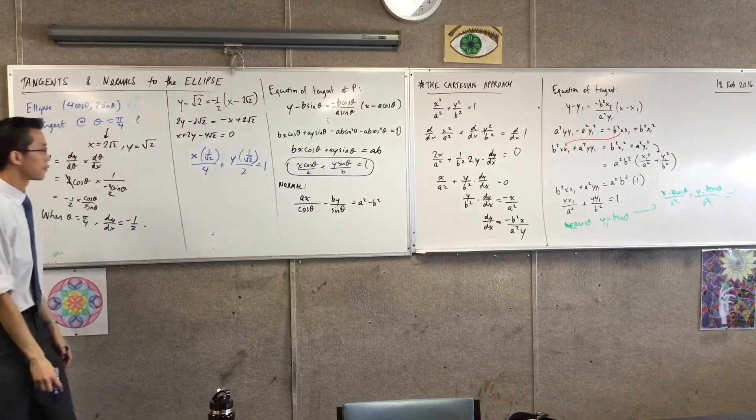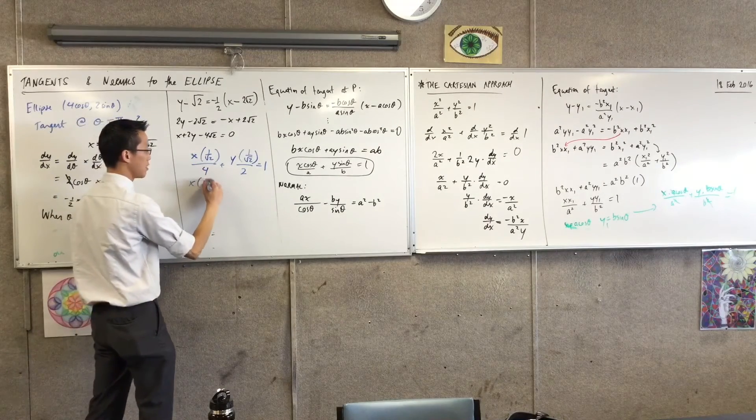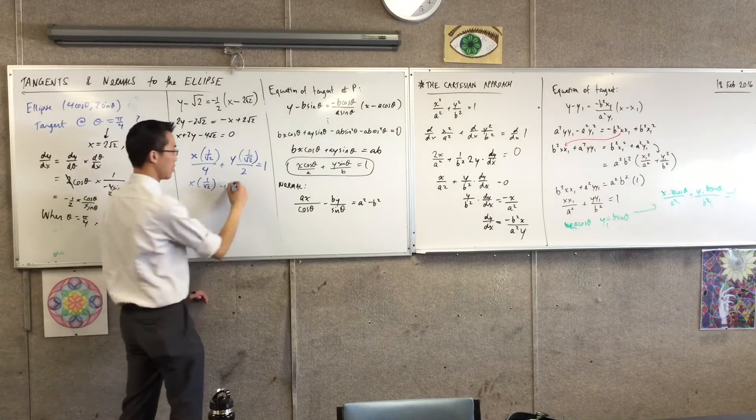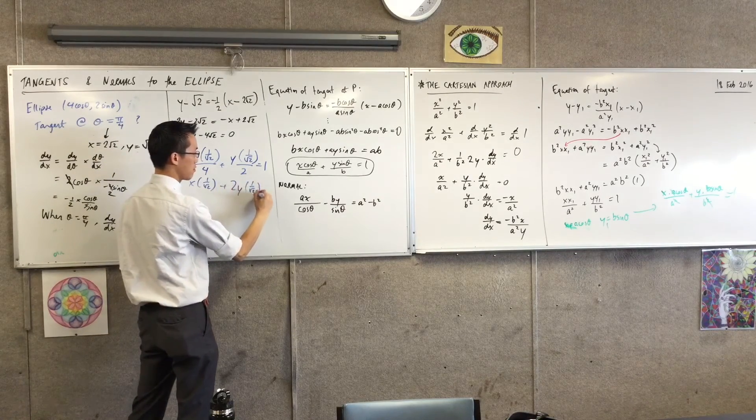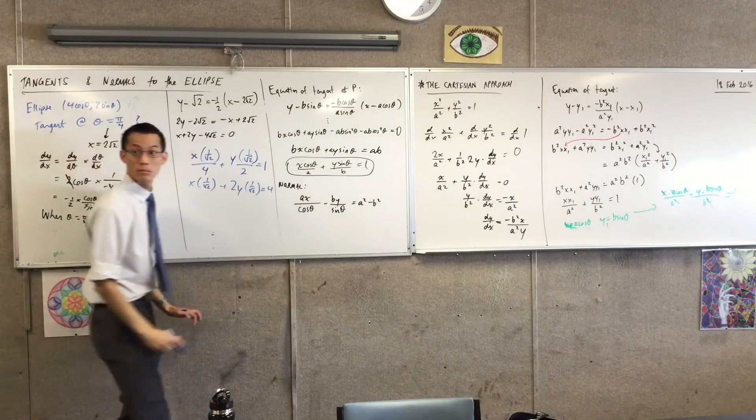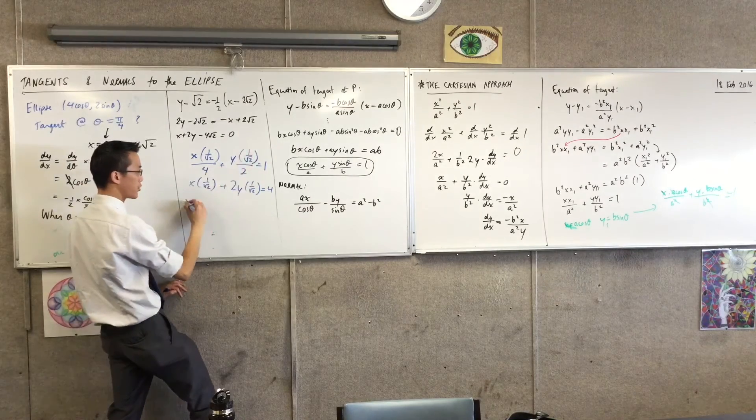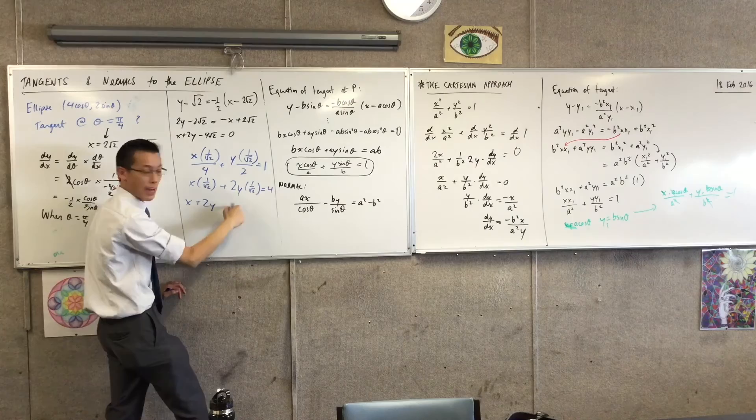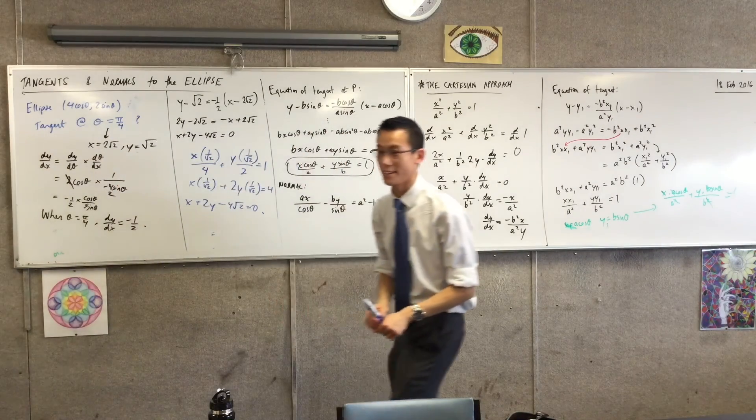4 will do it. That turns this into x over root 2. This turns into 2y over root 2 equals 4. I want to get rid of the root 2, so I'll multiply through by root 2, which gives me x plus 2y. Bring this over: minus 4 root 2, and there I am.